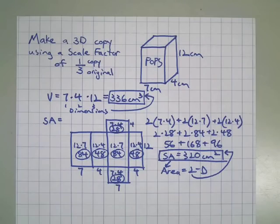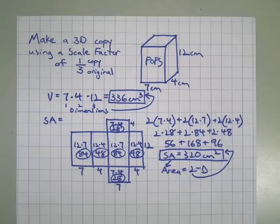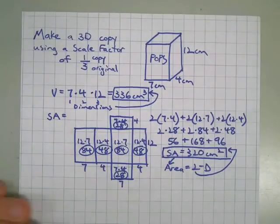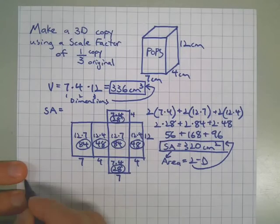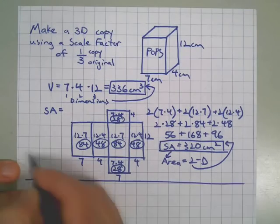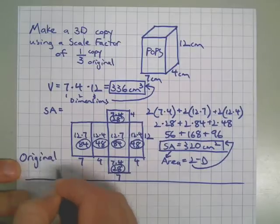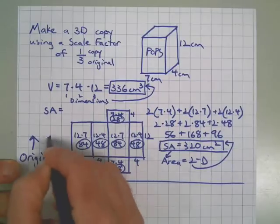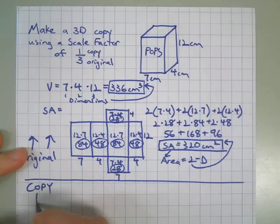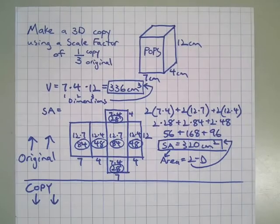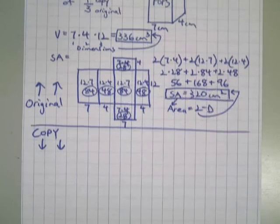Now it's time to get the measurements for the copy. Then we'll use those measurements to make a net, and then finally the 3D model will happen. So, I'm going to draw a line here. All of this stuff was for the original. Down here, we're going to do all the work for the copy. I'm going to slide it up here, I'll bring it back down in a minute.